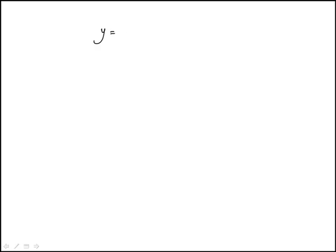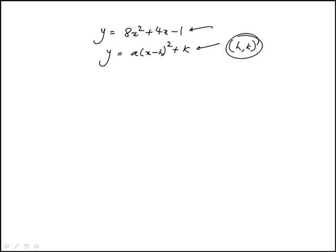We're given that y is equal to 8x squared plus 4x minus 1, and this has to be expressed in the form a times x minus h squared plus k. This is the equation for a parabola in standard form. The h value is the vertex of the parabola, and a tells us whether it opens up or down.